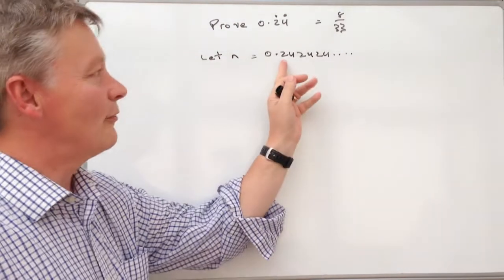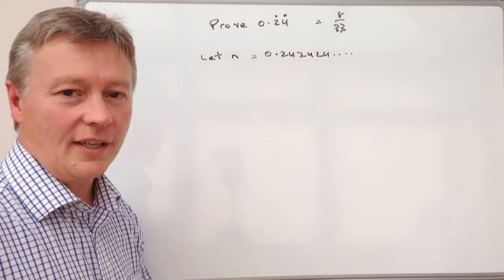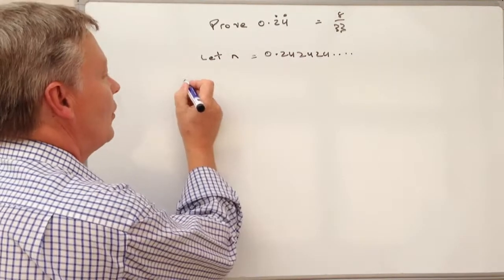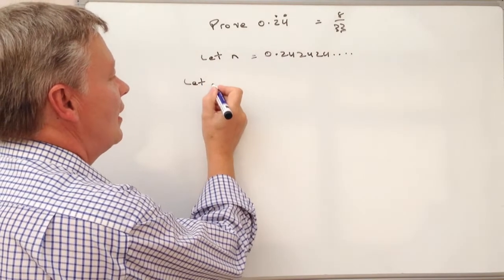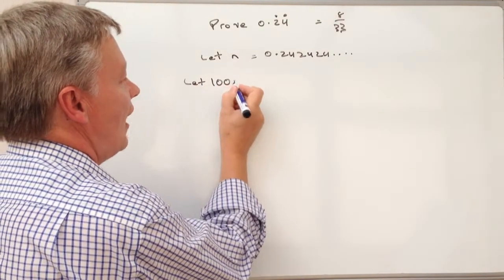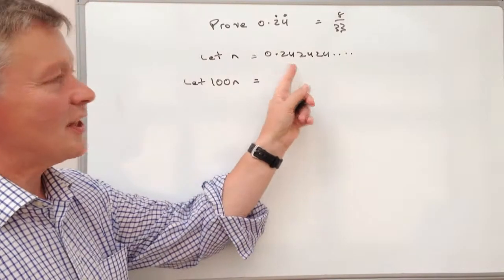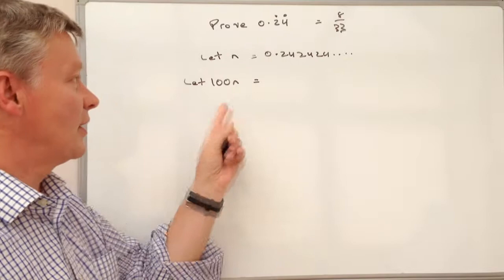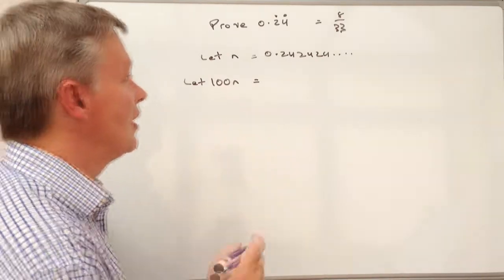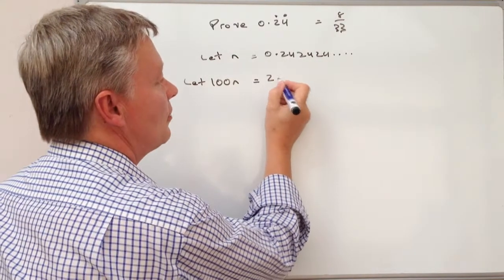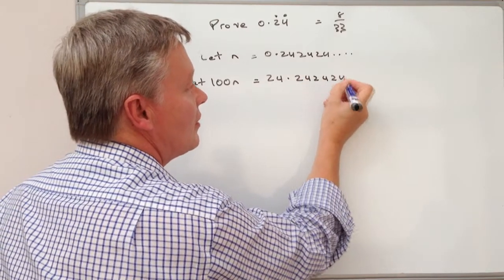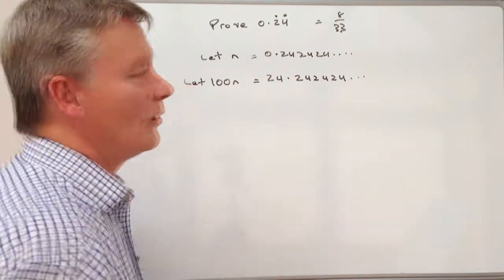Now because what I want to do is get rid of this, essentially I'm going to then multiply it by 100. So if I say that 100n will be exactly the same as that. What I'm going to do is move the decimal point two places because I'm multiplying by 100. So if I move the decimal point two places I get 24.242424 and so on.